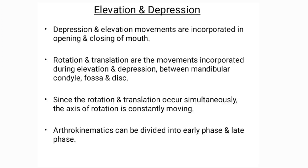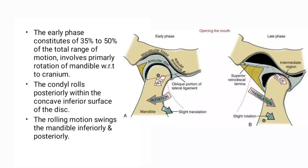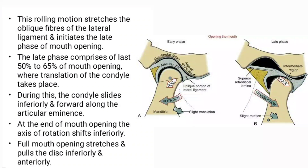Elevation and depression are the movements incorporated in mouth opening and closing. Rotation and translation are the movements incorporated during elevation and depression between the mandibular condyle, fossa, and disc. Since rotation and translation occur simultaneously, the axis of rotation is constantly moving. Arthrokinematics can be divided into an early phase and a late phase. The early phase constitutes 35 to 50% of the total range of motion and involves primarily rotation of the mandible with respect to the cranium. The condyle rolls posteriorly within the concave inferior surface of the disc, and this rolling motion swings the mandible inferiorly and posteriorly. This rolling motion stretches the oblique fibers of the lateral ligament and initiates the late phase of mouth opening.